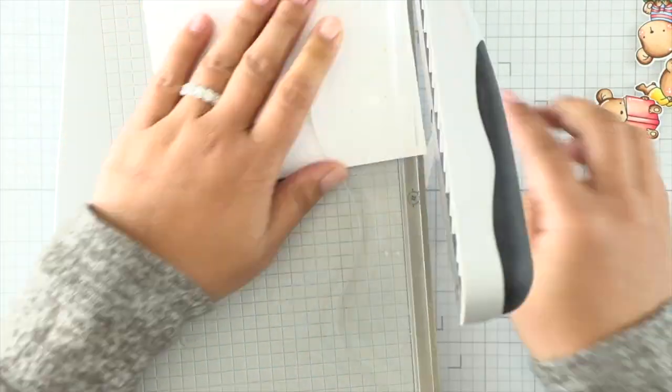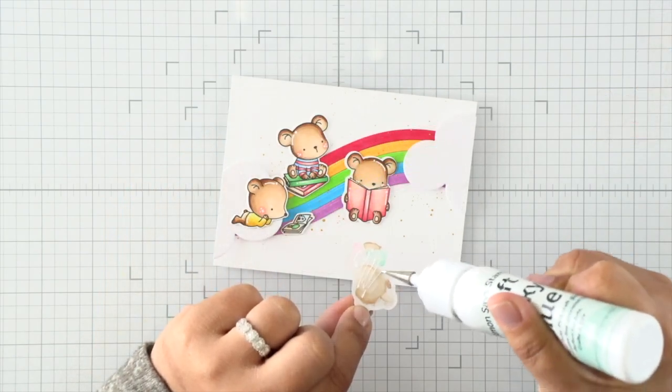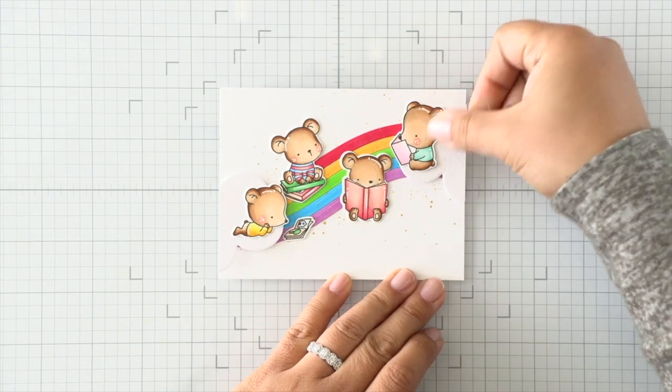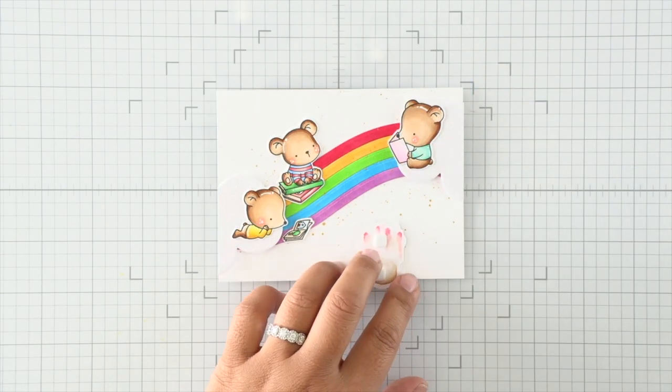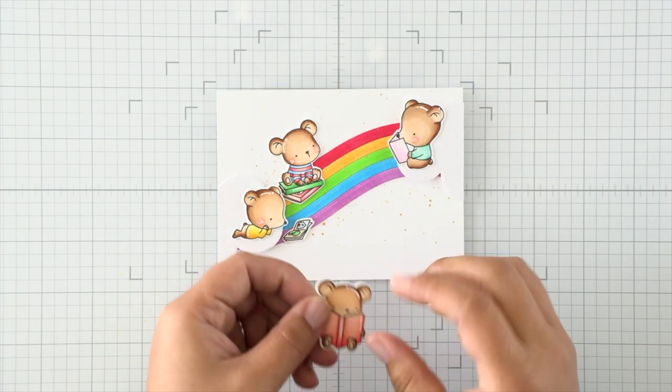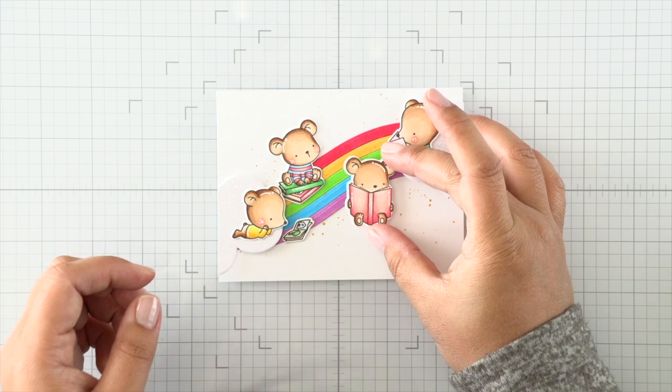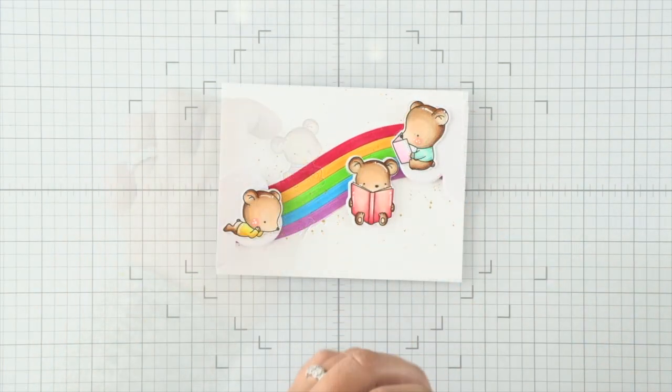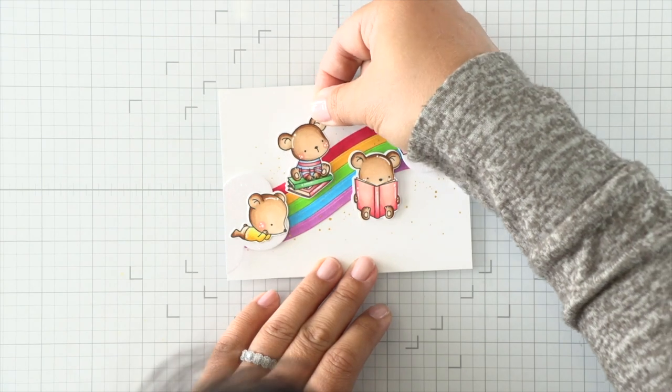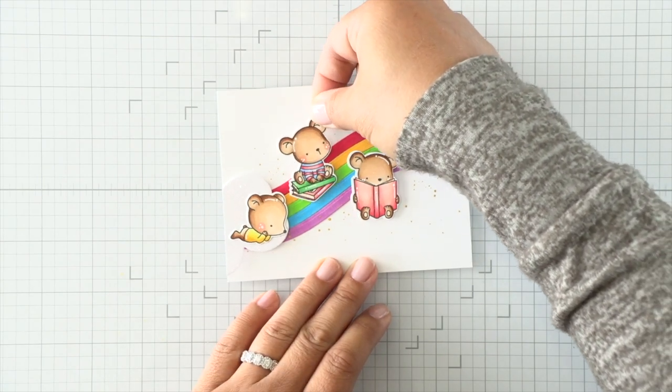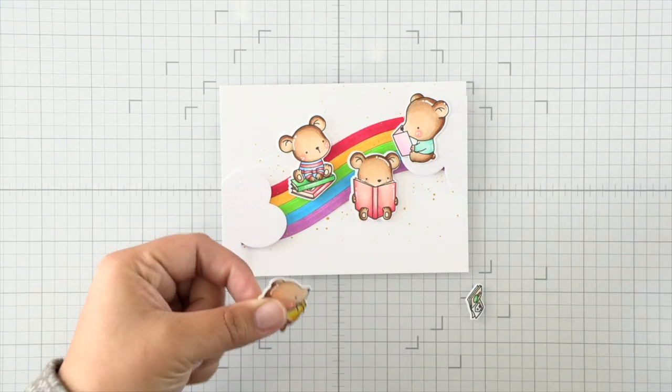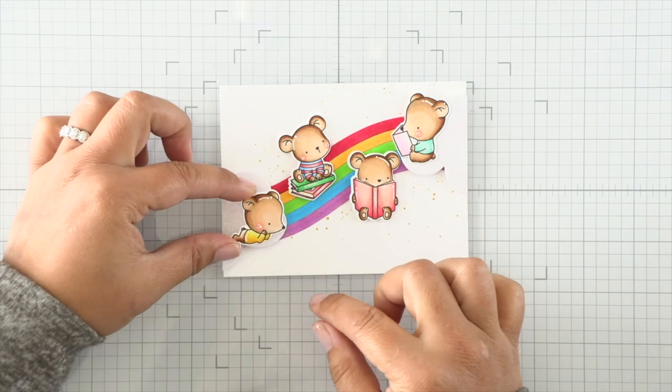We can add our bears with dimension as well using foam adhesive. For the bears that are sitting on the clouds, I'm adhering them with liquid adhesive—that's going to be the best way to adhere things to glitter cardstock. These other bears that are floating on the rainbow, I'm going to use foam adhesive to match the height of the other bears. I love that little bear reading on his tummy so much.